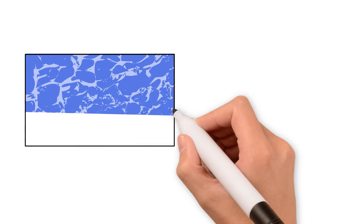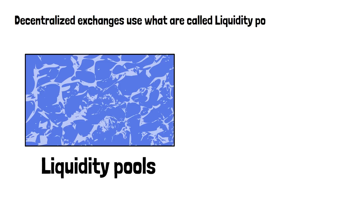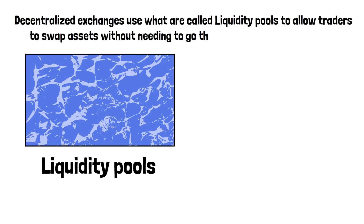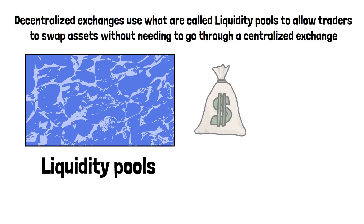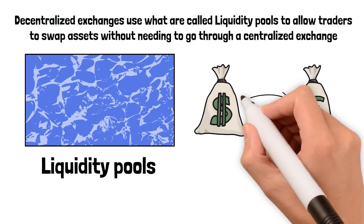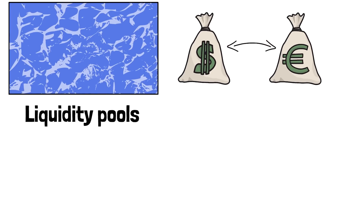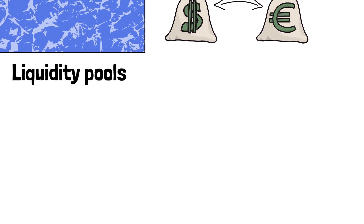Decentralized exchanges use what are called liquidity pools to allow traders to swap assets without needing to go through a centralized exchange. Let me use a few analogies to help you get a better understanding of how DEXes work.